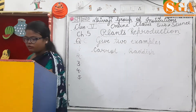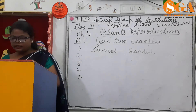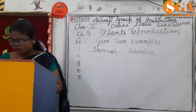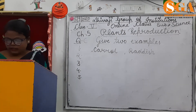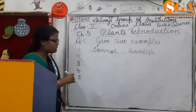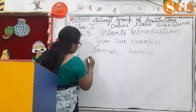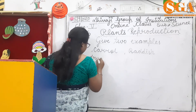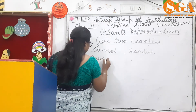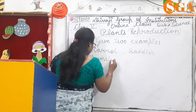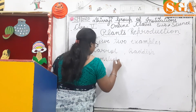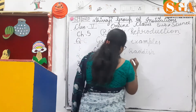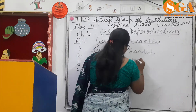Second: seeds dispersed by air. For example, drumsticks or maple. Drumsticks and maple.